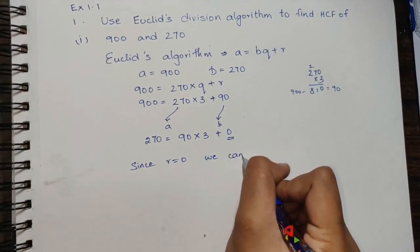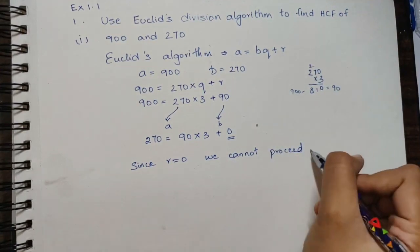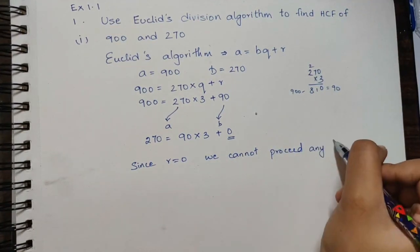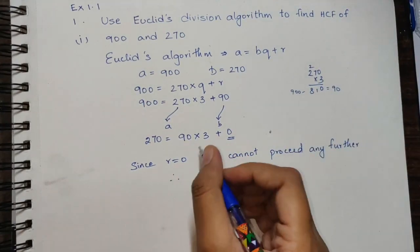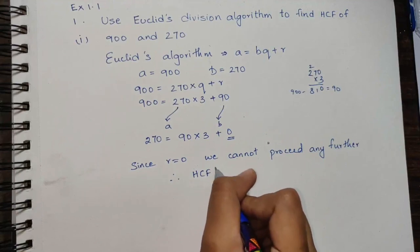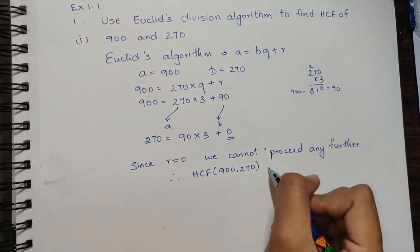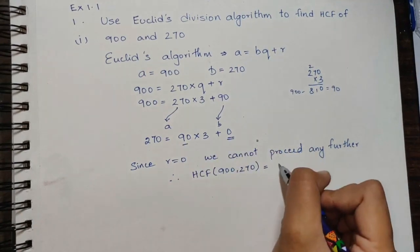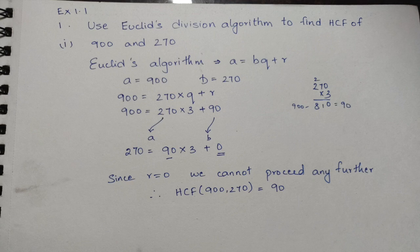we cannot proceed any further. Therefore, HCF of 900 and 270 is equal to 90. Download the solution from the link in the description box below.